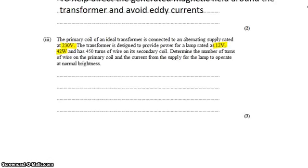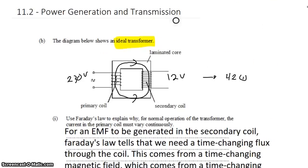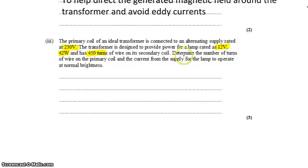There are 450 turns of wire on the secondary coil. Determine the number of turns of wire on the primary coil and the current from the supply for the lamp to operate at normal brightness. It's very unusual that they ask for two quantities in one question. Normally they would break that up, but there you have it, that's what they've done.